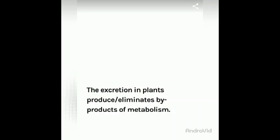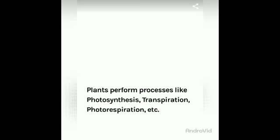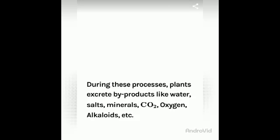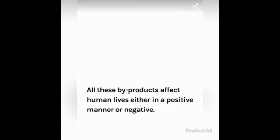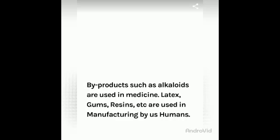Now let us revise. Excretion in plants produces or eliminates byproducts of metabolism. Plants perform processes like photosynthesis, transpiration, photorespiration, etc. During these processes, plants excrete byproducts like water, salts, minerals, carbon dioxide, oxygen, and alkaloids, etc. All these byproducts affect human lives either in a positive or negative manner. Byproducts such as alkaloids are used in medicines. Latex, gums, resins, etc. are used in manufacturing by humans. So this is all about excretion in plants.